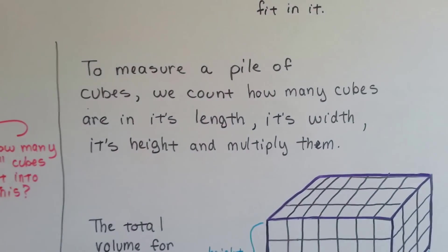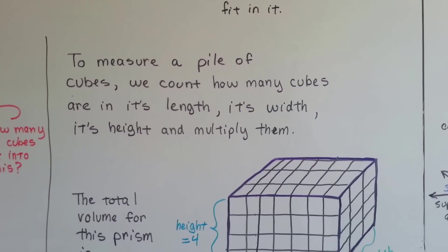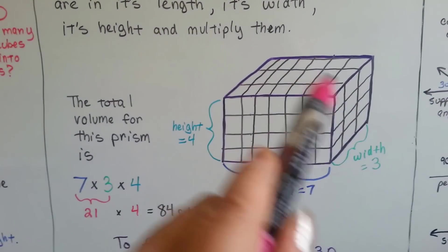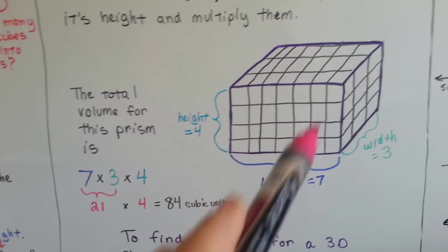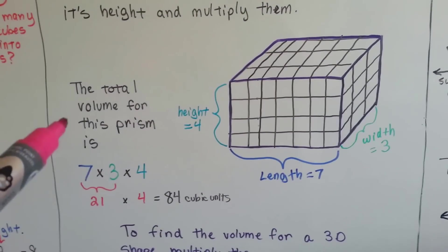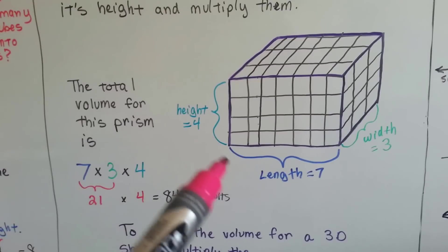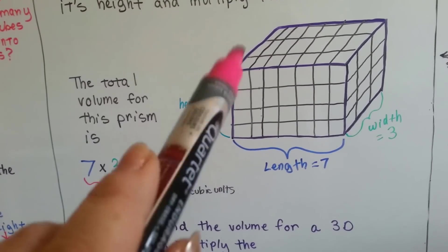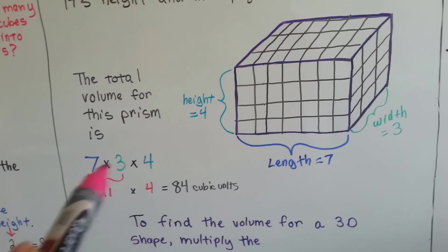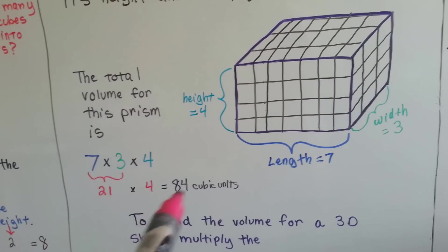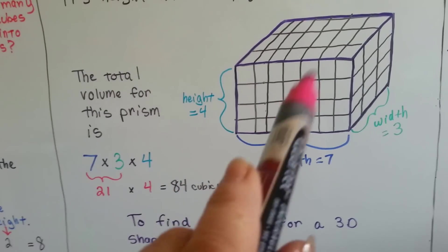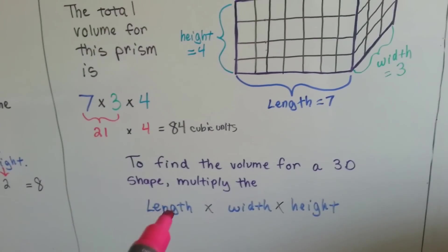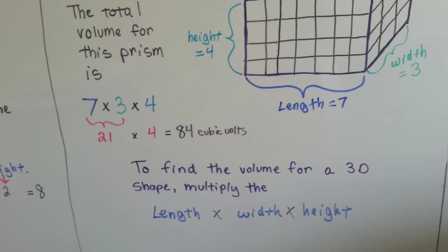To measure a pile of cubes, we count how many cubes are in its length, its width, and its height, and we multiply them. If we had this big, huge block of cubes, this big prism, and we needed to find the total volume for it, we would measure its length, its width, and its height. The length is seven, the width is three, and the height is four, and we multiply that. Seven times three is twenty-one. Twenty-one times four is eighty-four. There's eighty-four cubes here. So to find the volume for a 3D shape, you multiply the length times the width times the height.